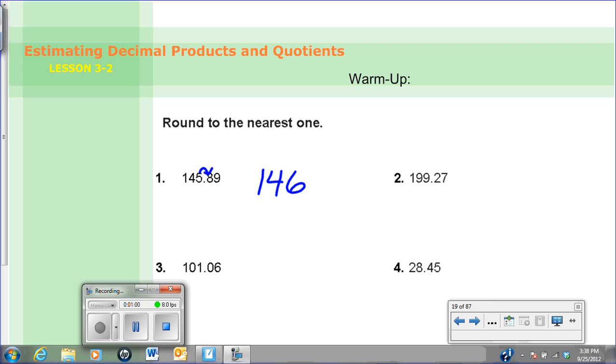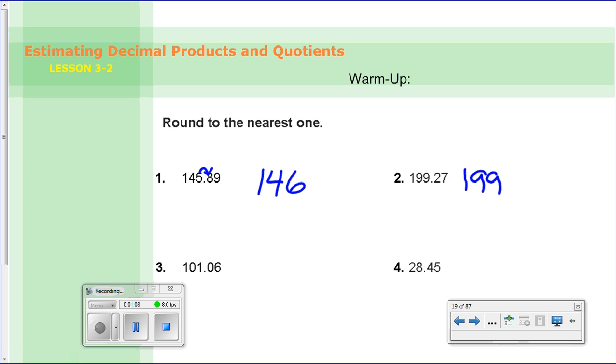Alright, so let's go ahead and check those answers. We have for number 2, 199.27. Well that is closer to 199 instead of 200. Number 3 we have 101.06. Well again, you could look afterwards, it's a 0, so it'll stay at 101.